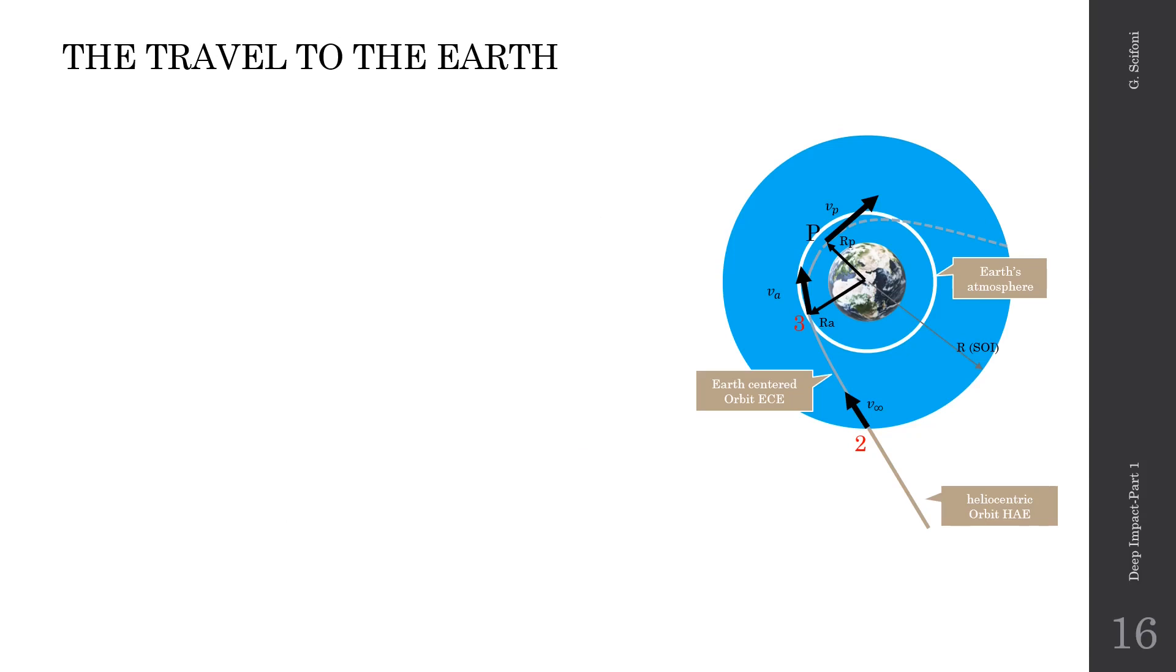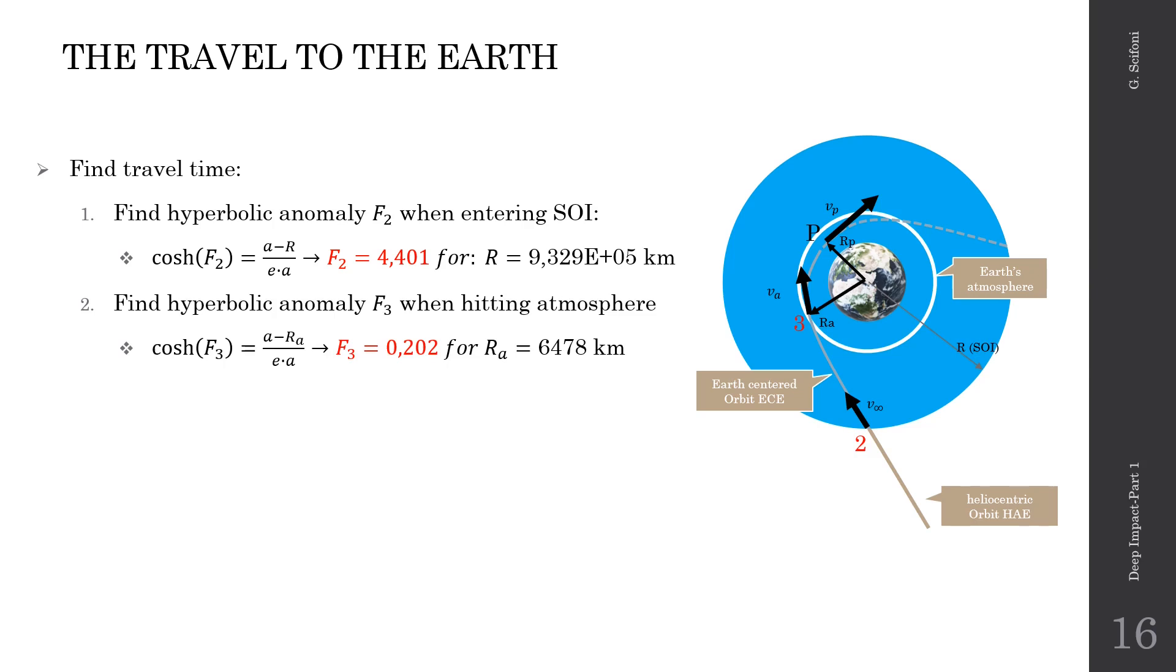The last calculation we have to do is the travel time, and we use the hyperbolic anomaly F for that. Let's call F2 its value at the sphere of influence boundary, which is achieved when r is 933,000 kilometers. By using the formula displayed, we get F2 4.401. With the same formula, when r is equal to the atmosphere radius, we find F3 0.202. And now we introduce both F values in the expression of the time to the periapsis. And by difference, we get the time between position 2 and 3, that is about 50.5 hours. So this is the travel between position 2 and position 3, up to the atmosphere.